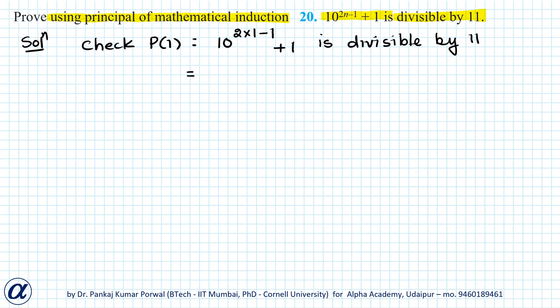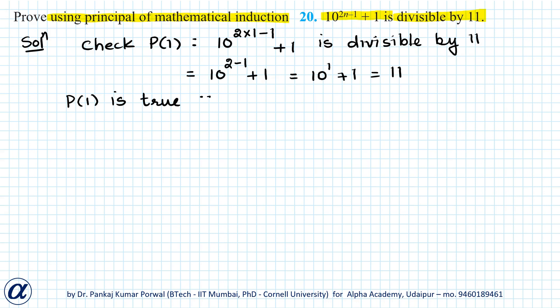This I can simplify to get 10 to the power 2 minus 1 plus 1, which equals 10 to the power 1 plus 1, equals 11. And we know 11 is divisible by 11. So P(1) is true because 11 is divisible by 11.